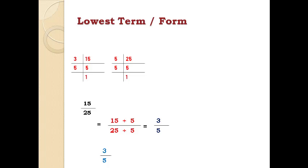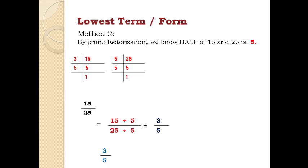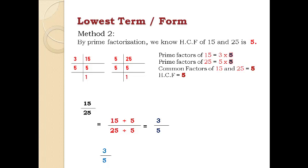Method 2: by prime factorization, we find the HCF of 15 and 25 is 5. Using prime factorization, we get the prime factors of 15 and 25 and the HCF is 5. Dividing 15 over 25 by 5 gives the equivalent fraction 3 over 5. Since 3 over 5 cannot be reduced any further, 3 over 5 is in its lowest term.